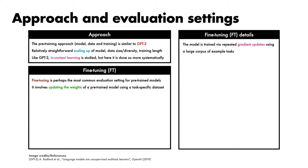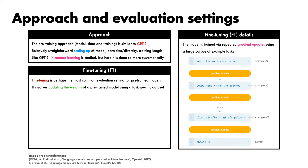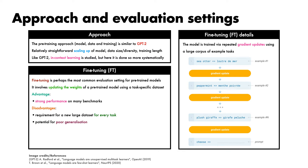For a slightly simplified summary, using the example task of translating English to French: we are given an example input-output pair, then we perform a gradient update on the model. We are then given a second example, perform a gradient update, and so on up to the nth example and gradient update. At test time, we provide the model with a prompt containing the input in English to be translated into French. The advantage of such a fine-tuning approach is its strong performance on many benchmarks. Its disadvantages are its requirements for a new large labelled dataset for every task, its potential for poor generalisation, and specifically its potential to exploit spurious features of the training data. This latter point in particular can lead to an overly optimistic assessment of the ability of a model relative to human ability on a task.